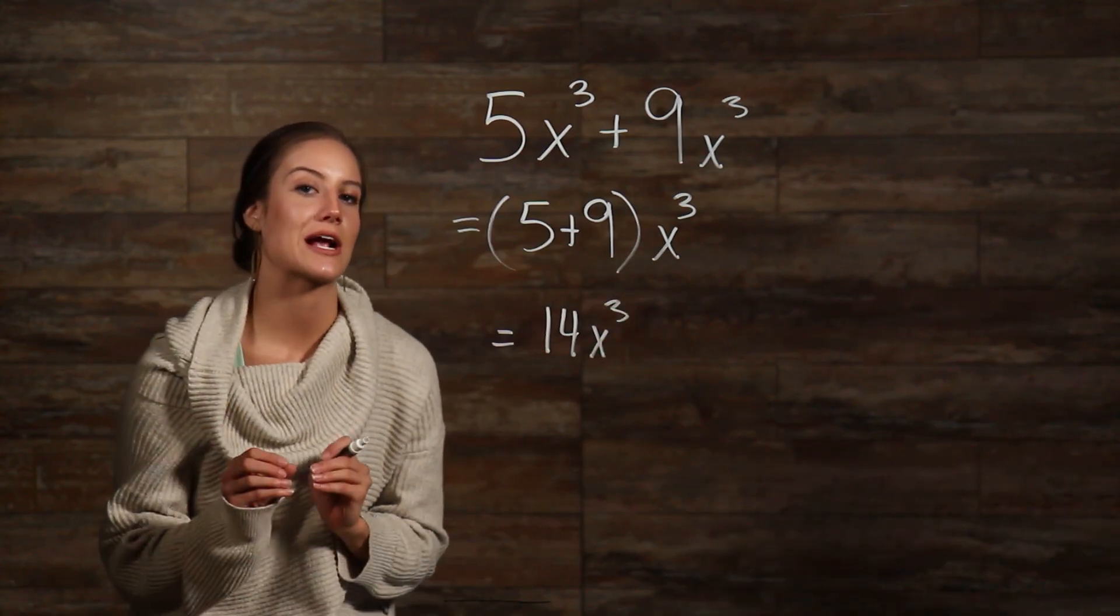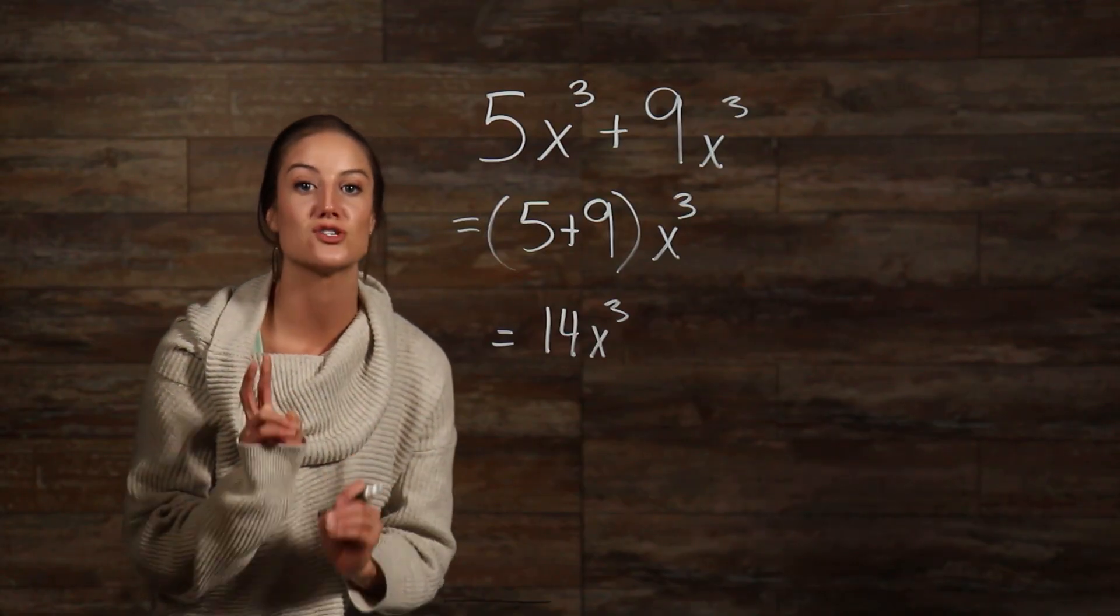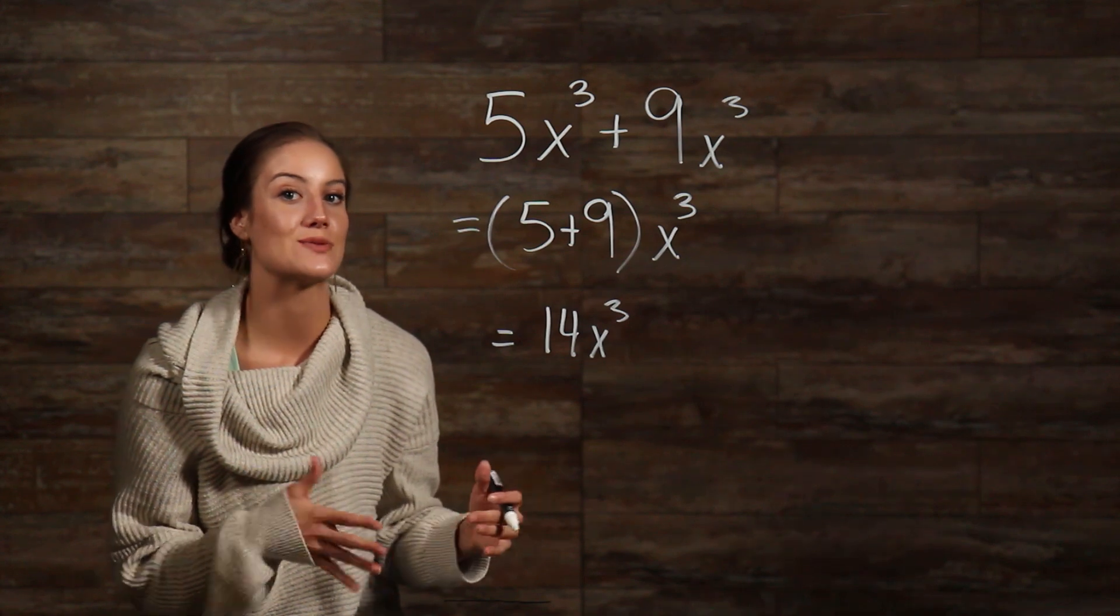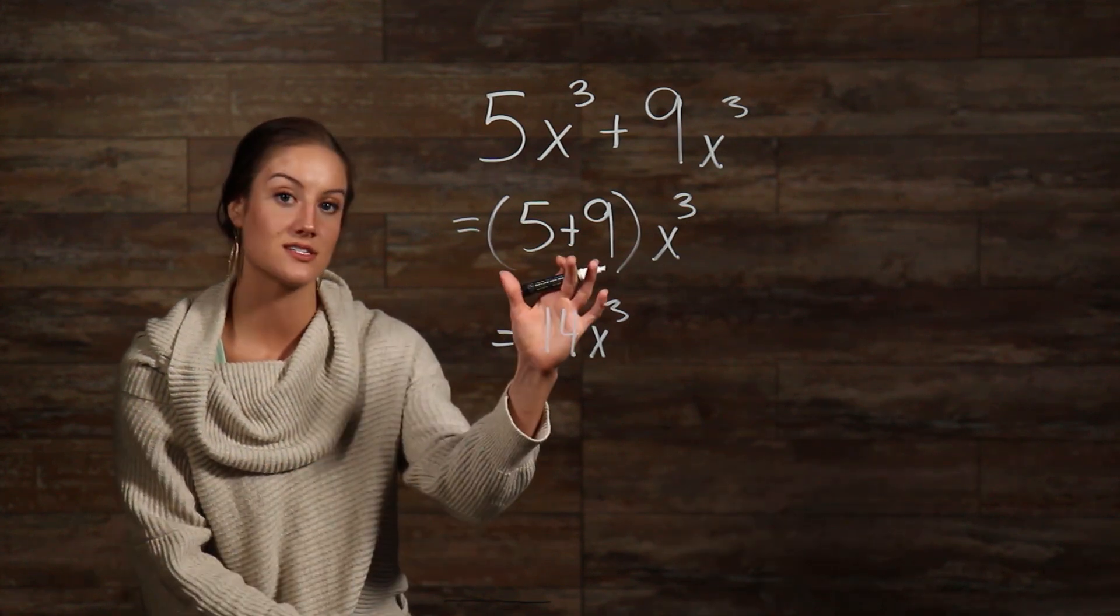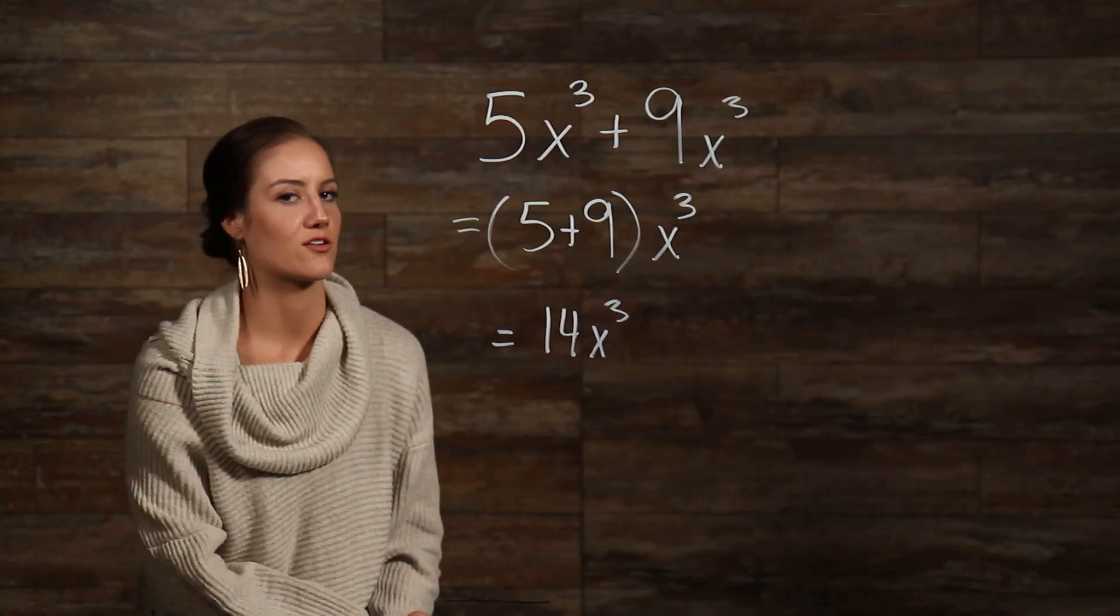Remember, to add or subtract numbers that have exponents, you must first make sure that the base and exponent of the two terms you're trying to add or subtract are the same. If they are the same, then all you have to do is add together the coefficients and keep the base and exponent the same. Let's take a look at another example.